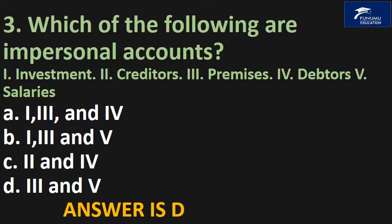Which of the following are impersonal accounts? 1. Investment, 2. Creditors, 3. Premises, 4. Debtors, 5. Salaries. A. one, three and four, B. one, three and five, C. two and four, D. three and five. The answer is D.